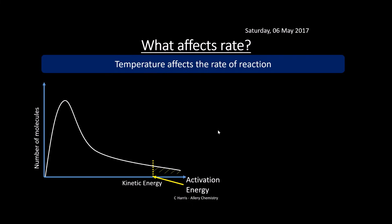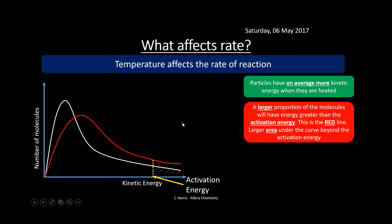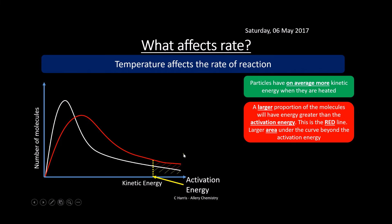Temperature affects the rate of reaction. Particles, on average, have more kinetic energy when heated, so a larger proportion of molecules will have energy greater than the activation energy. The red line here shows the higher temperature curve. Key things to notice: the red line crosses the original line once; the peak of the curve is lower and shifted slightly to the right because more particles have more energy; and the area beyond the activation energy is greater than before. The area under both curves, however, remains the same.